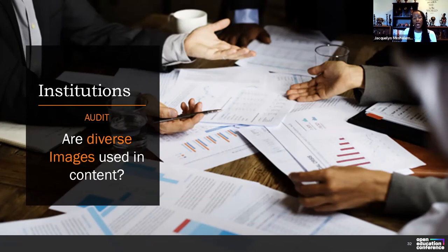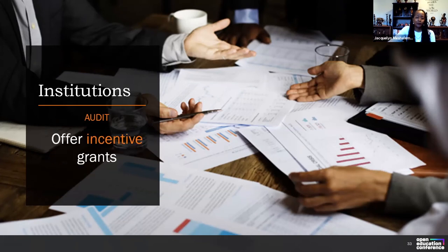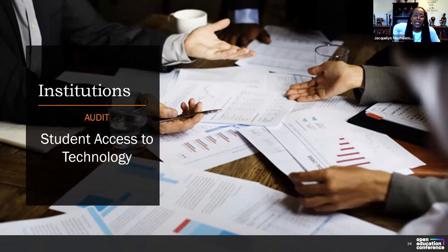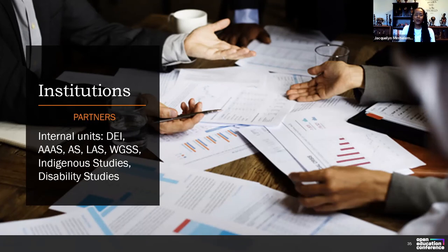Do the courses include issues and concerns of women, people with different abilities, and people from different countries? Audit what you're putting out there. How diverse are the images? Finding diverse images was one of my frustrations — doing something as basic as finding an image of someone who looked like the people I was talking about, holding a cell phone or eating an apple. Racially diverse images are hard to come by. We need grants and money to do this important work, and we need to address student access to technology.